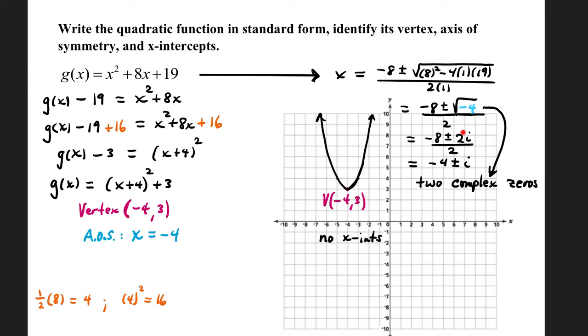The square root of negative 4 is 2i. So we have negative 8 plus or minus 2i all over 2. Divide all these by 2, and that gives you negative 4 plus or minus i. When you have complex zeros, you don't have any real numbers for x-intercepts, and that's okay. These graphs don't always have to cross or touch the x-axis.